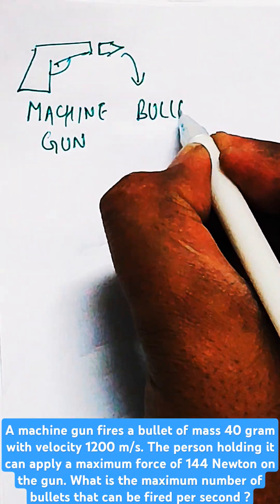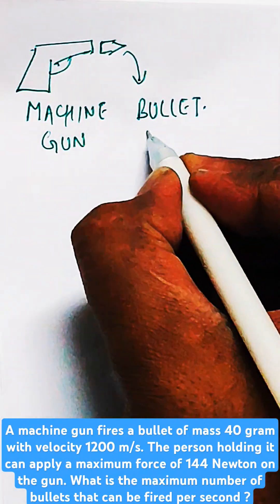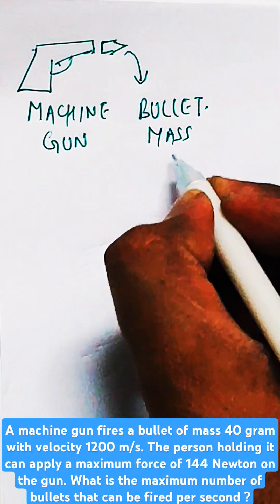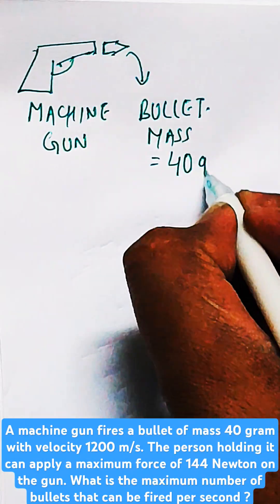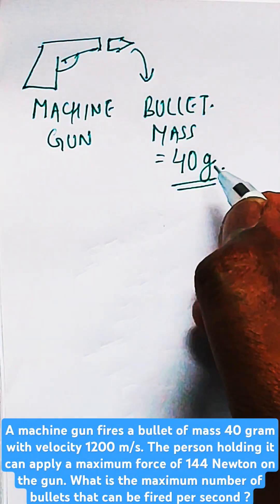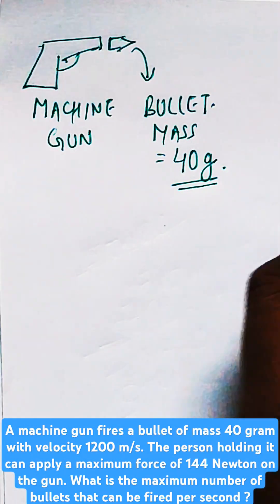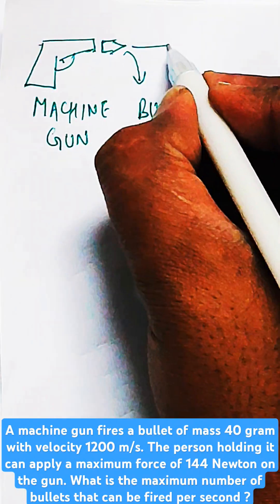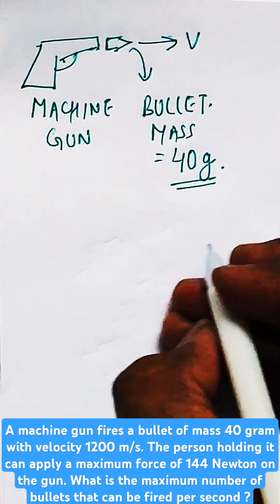The person holding the gun holds it with the application of a maximum force of 144 Newtons on the gun. That means the force applied is equal to 144 Newtons. We need to find what is the maximum number of bullets that can be fired per second.